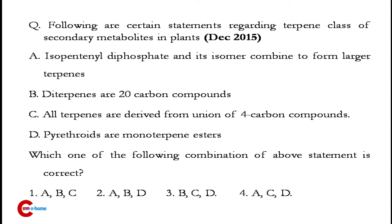Secondary metabolites are organic compounds produced by plants, but they don't have any direct function in the growth and development of plants. Their functions include protecting plants against being eaten by herbivores, against infection by microbial pathogens, serving as attractants for pollinators and seed-dispersing animals, and acting as agents of plant-plant competition.